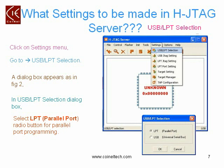Go to the Settings menu and select the first option, USB LPT Selection. When you select USB LPT Selection, the dialog box appears indicating through which port you want to target your board. There are two options: LPT (parallel port) and USB (universal serial bus). Since we are targeting the board through parallel port using Edge JTAG, select the LPT option and then click OK.